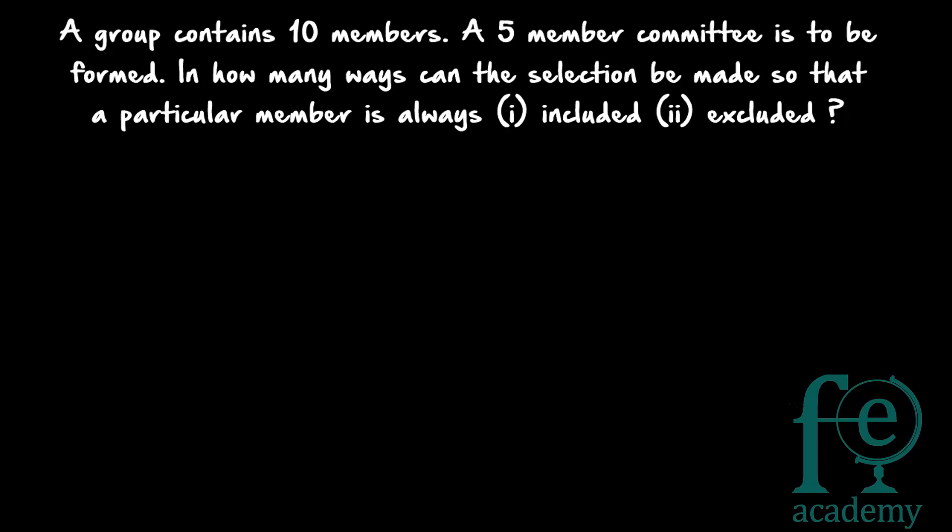Hi friends, welcome to today's class. Today's question is: a group contains 10 members and a 5-member committee is to be formed. In how many ways can the selection be made so that a particular member is always included? The second question is: in how many ways can it be done if a particular member is always excluded?